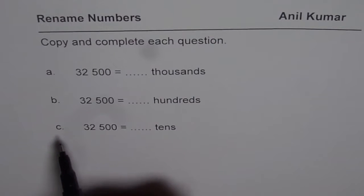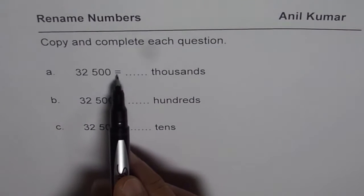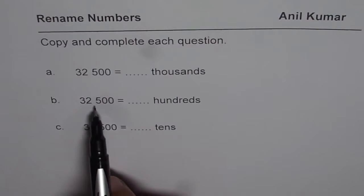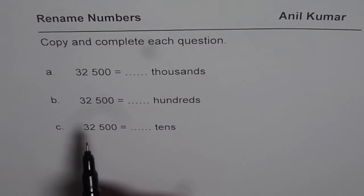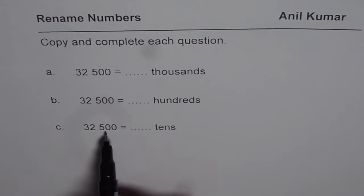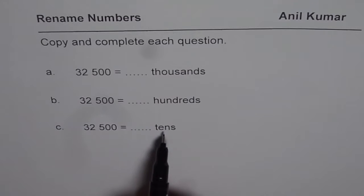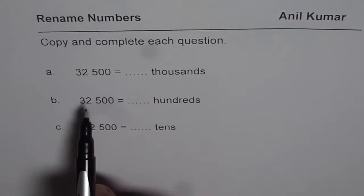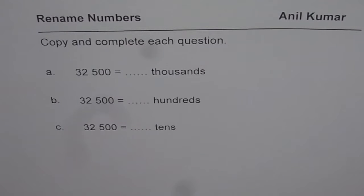The first one is 32,500 is equal to how many thousands, and the same number 32,500 is how many hundreds, or 32,500 is how many tens. Once you write it like that, you know how to rename the number 32,500. Once you understand that, then you can rename any five digit number.